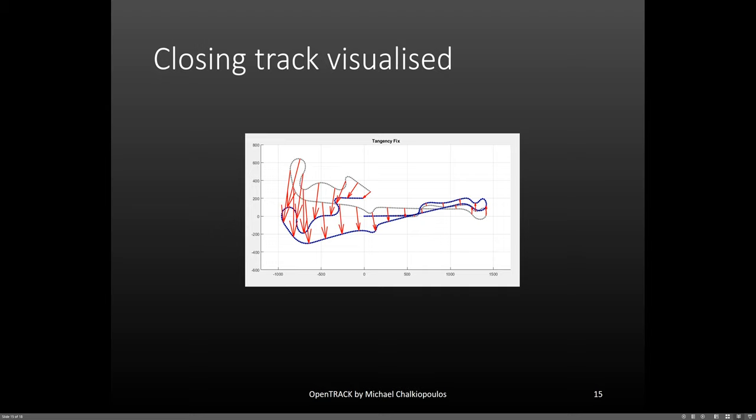In dark gray, we have the map before the tangency fix, and in blue, the map after the tangency fix. Then, we go to stage two. This is where we close the map. And sure enough, when the algorithm is done, we get the desired result.